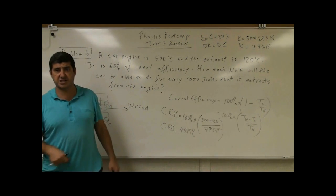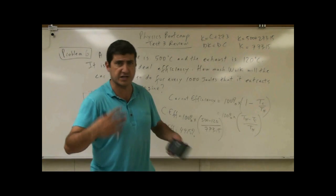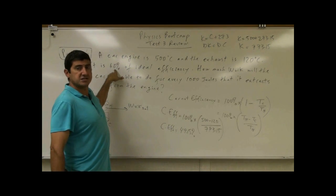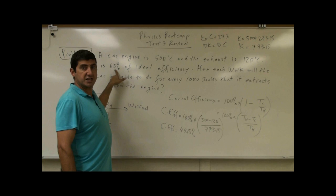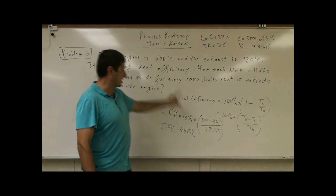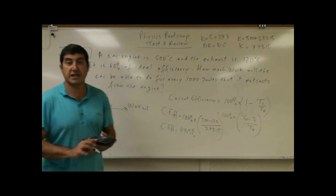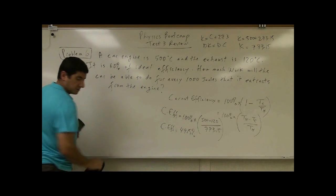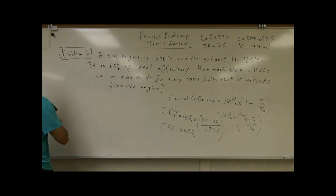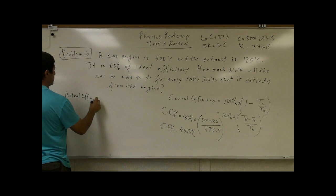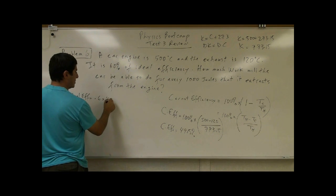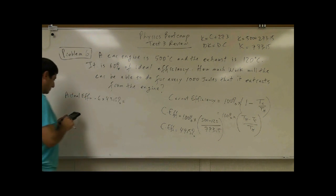But due to heat losses and frictional losses and all different kinds of other losses, the car is only going to be 60% of the ideal efficiency that it can be. So what's 60% of 49%? That's going to give you the actual efficiency of the engine. So the actual efficiency is equal to 0.6, which is 60% of 49.15%.